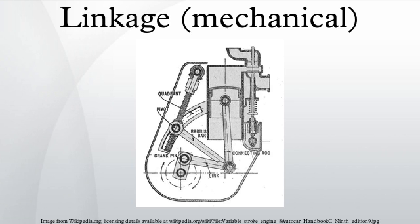Each link in a chain is connected by a joint to one or more other links. Thus, a kinematic chain can be modeled as a graph in which the links are paths and the joints are vertices, which is called a linkage graph.